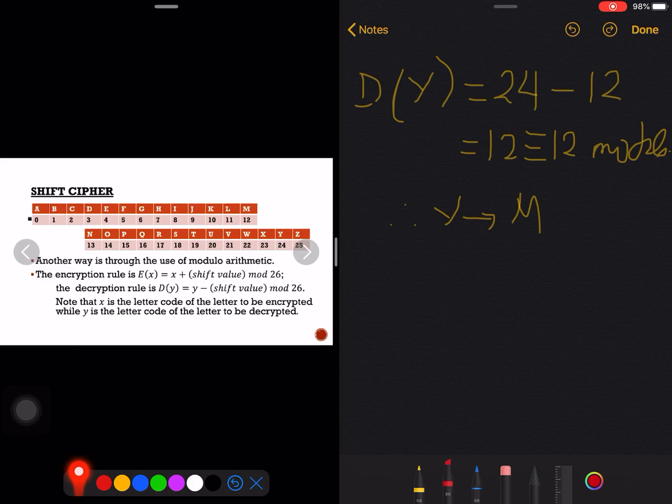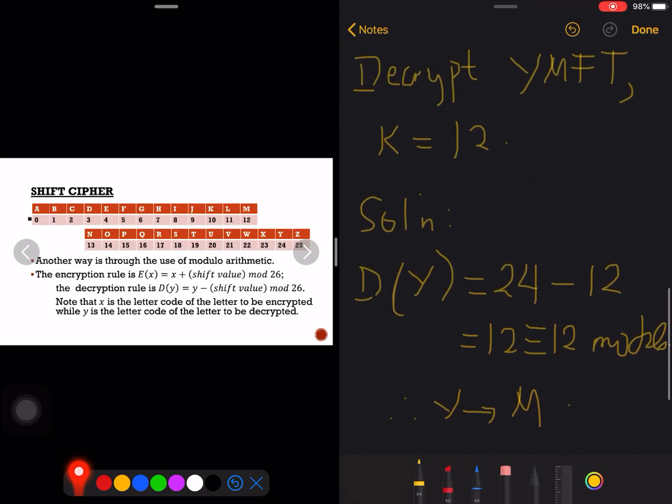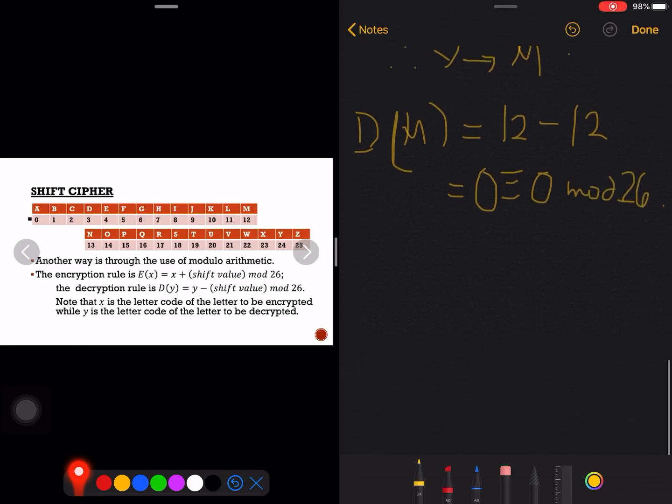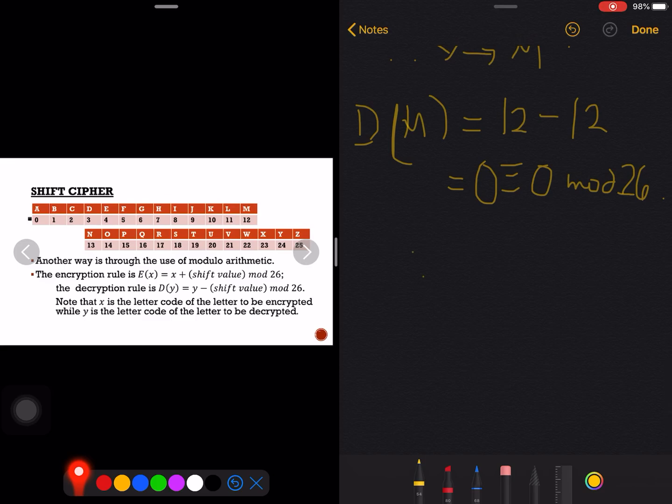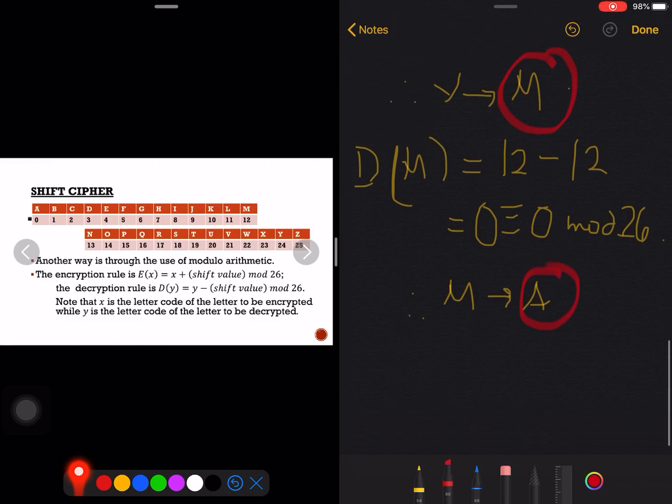See, we can retrieve our message. Decrypting this time letter M. Letter code of M is 12 minus our key which is 12. The answer is 0. As discussed in modular arithmetic video, 0 is still congruent to 0 mod 26, and the letter that owns 0 as its letter code is of course A. You see we can really get the original message MATH.